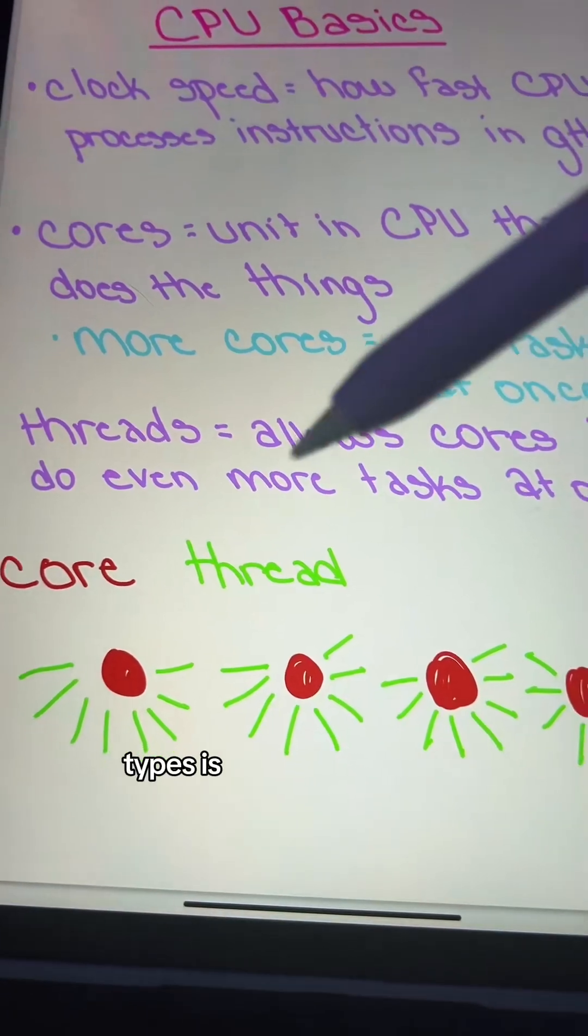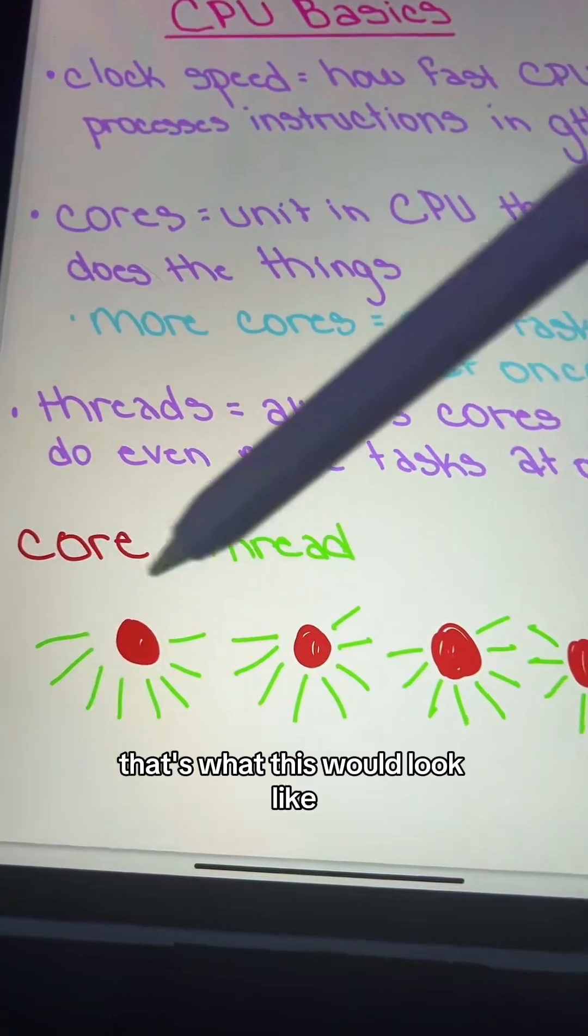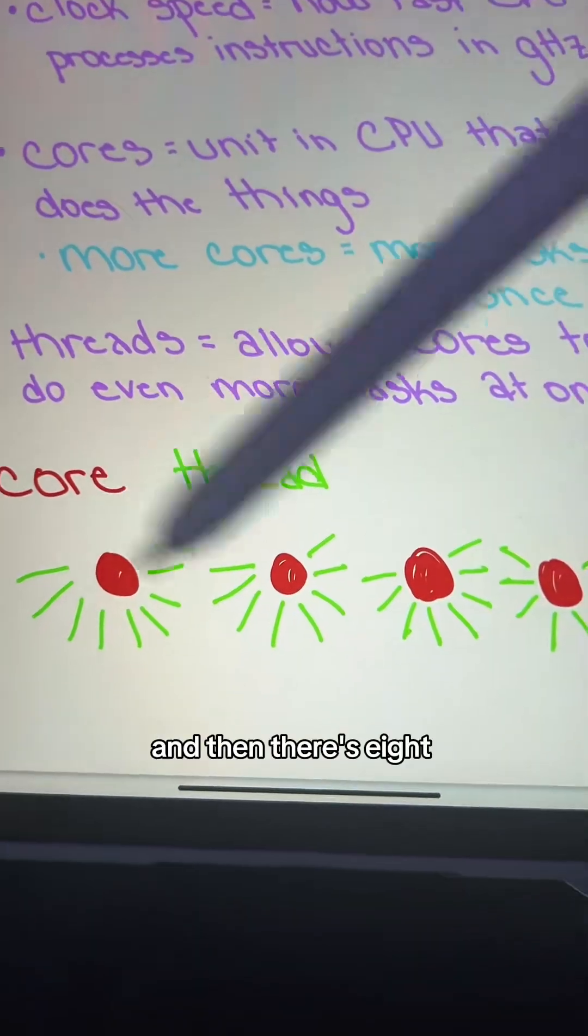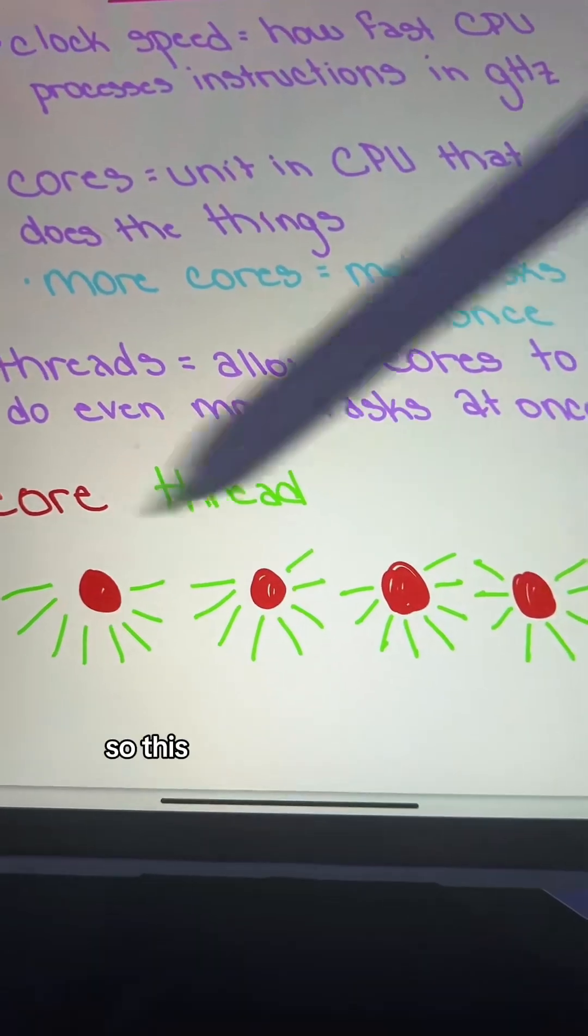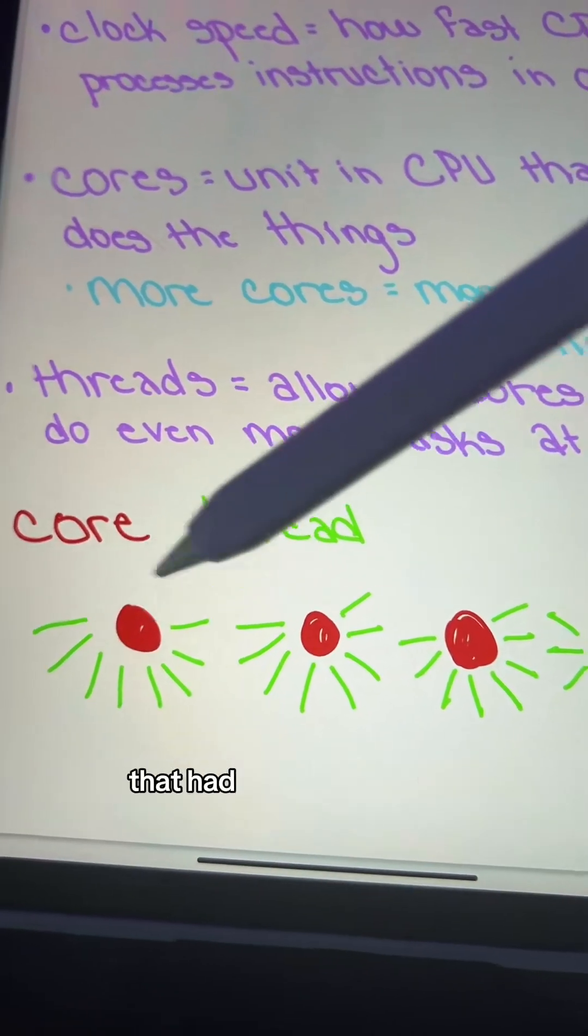One of the most common CPU types is to have four cores and eight threads. So that's what this would look like. So here's your four cores, and then there's eight threads coming off of each of those. So this can handle a ton more multitasking than just our singular core that had four threads on it.